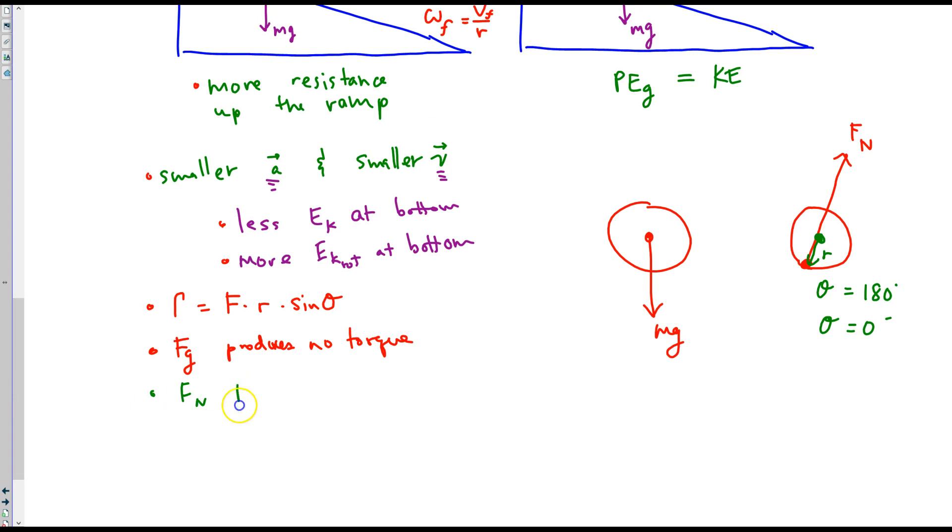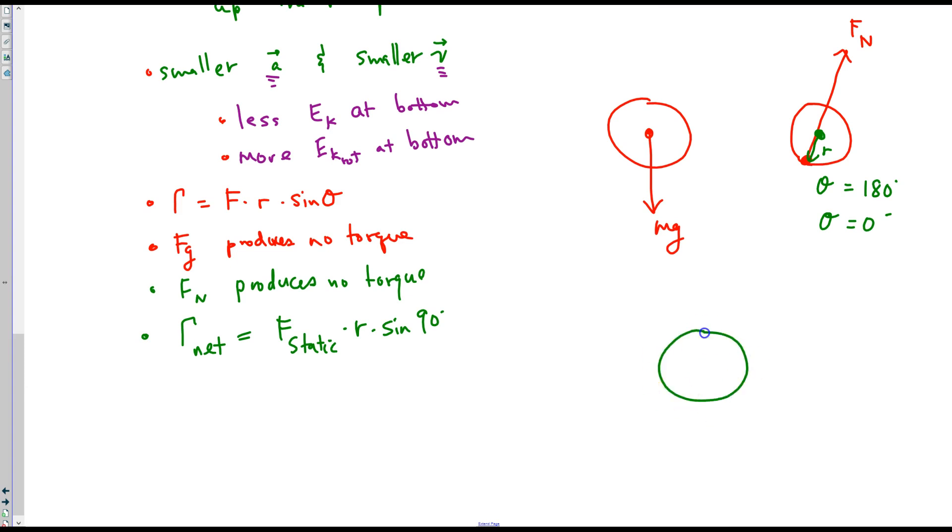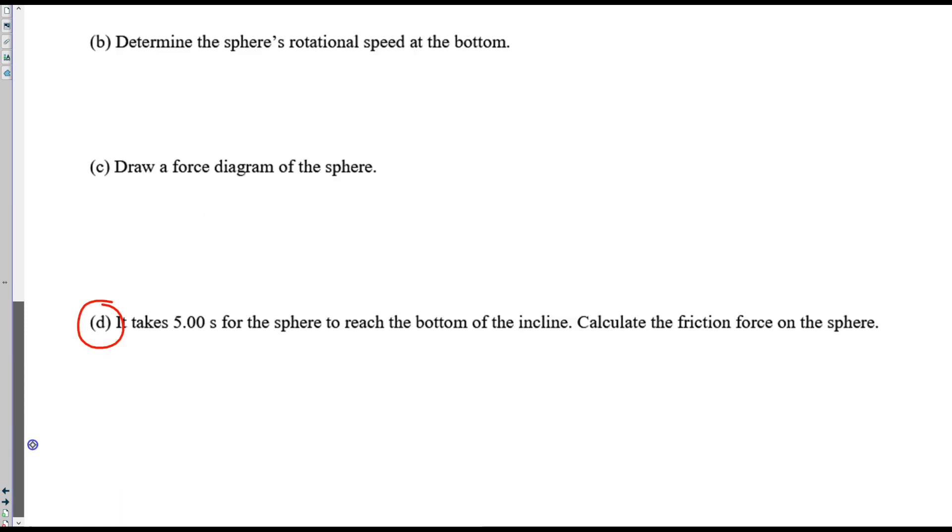So, what does that do to the torque? There is no torque from the normal force. So, now we have Fn produces no torque. And the only torque, the net torque, is from static friction alone. But the angle is 90 degrees, because if we look at static friction, static friction points back this way, and r is like this. The friction force is tangent. That's a 90 degree angle. So, sine of 90 is 1, and we can leave it off. That's going to be important when you try to solve part D.